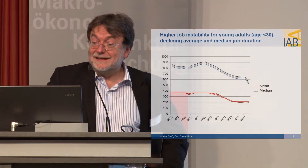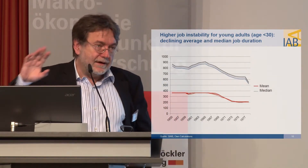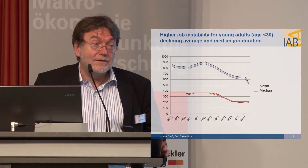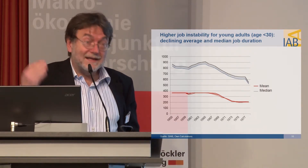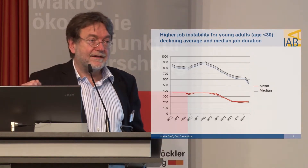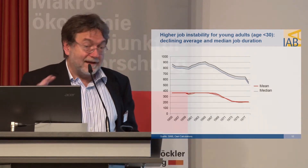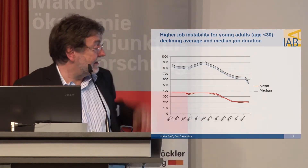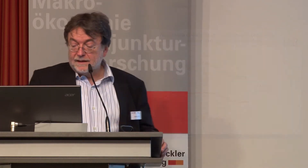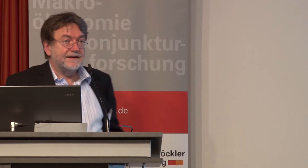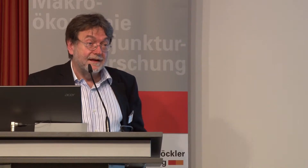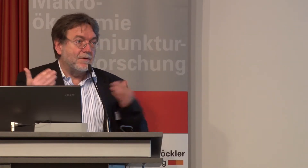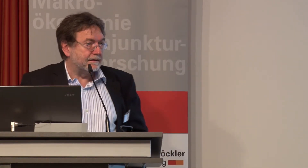This figure shows higher job instability for a certain group of people. If you consider job stability for the entire workforce, you won't find a decrease in job stability — tenure is quite long in Germany, and there is no trend over time for persons above 30. But for young people, the average and median job duration are declining: from around 800 days for the cohort born in 1963 to around 600 days for the later cohorts born in the late 1970s. This means a substantial change in job stability, especially for the low-skilled.